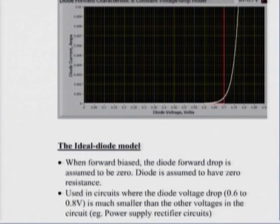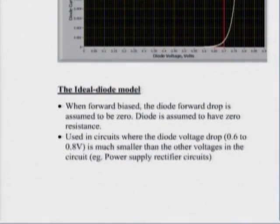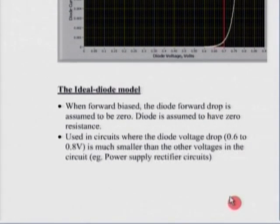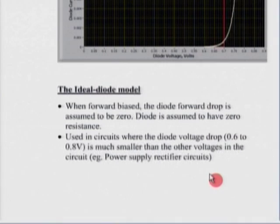There is also the ideal diode model, where you assume the forward drop is 0 and the diode also has zero resistance. This is used especially in rectifier circuits, where you generally ignore the diode drop. The argument is that in a rectifier application, the input voltage is much higher than 0.6 or 0.7 V, so ignoring it is well justified. All four models are used depending on the kind of application we have in mind.